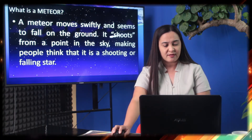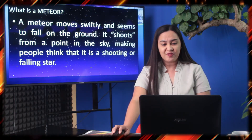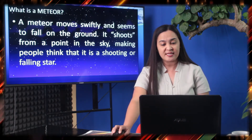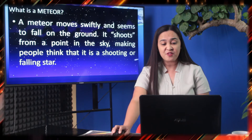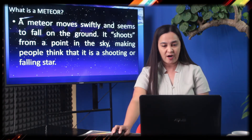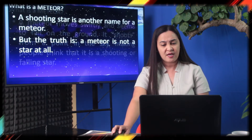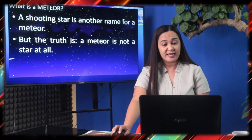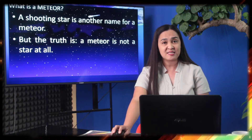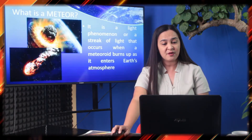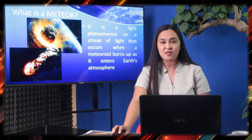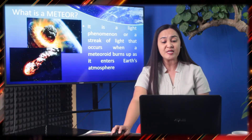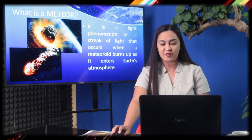What is a meteor? A meteor moves swiftly and seems to fall on the ground. It shoots from a point in the sky, making people think that it is a shooting or falling star. But actually, a shooting star is another name for a meteor. The truth is, a meteor is not a star at all. It is a light phenomenon — a streak of light that occurs when a meteoroid burns up as it enters the Earth's atmosphere.